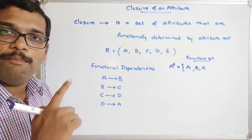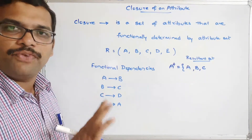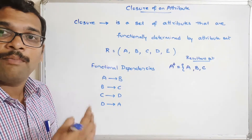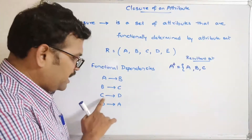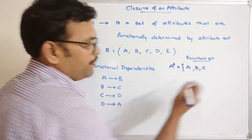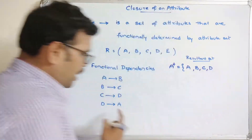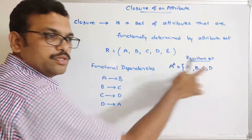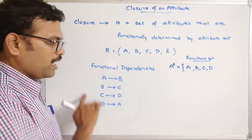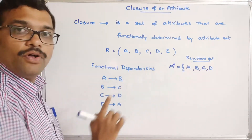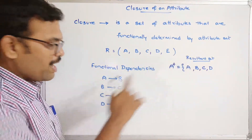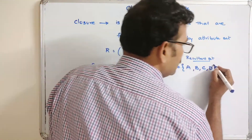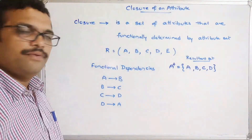We check again — from d→a, we get a, but a is already in the set. So no new attributes are added. Therefore, a+ = {a, b, c, d}. This is the closure of attribute a.